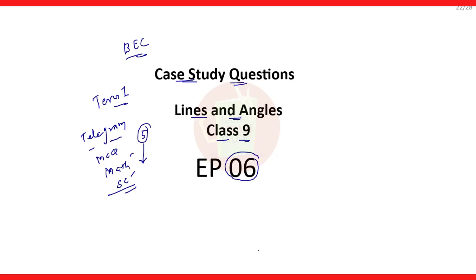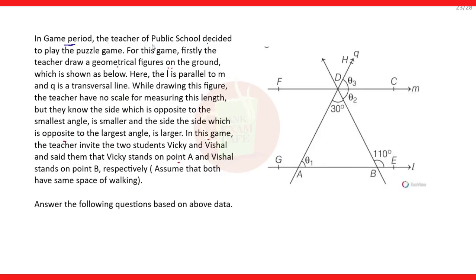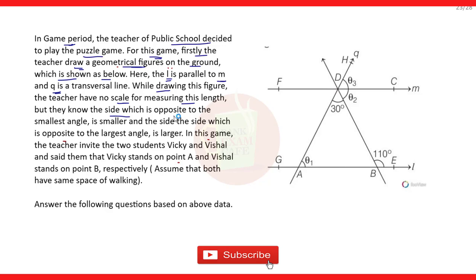Now let us see the first question. In game period, the teacher of a public school decided to play a puzzle game. For this game, the teacher drew geometrical figures on the ground as shown below. Here, L is parallel to M — it is given that line L is parallel to line M. These two are parallel, and Q is a transversal. While drawing this figure, the teacher had no scale for measuring length, but they knew that the side opposite to the smallest angle is smaller and the side opposite to the largest angle is larger.